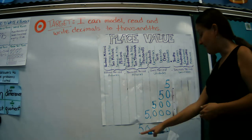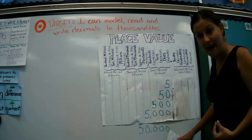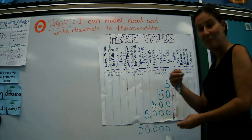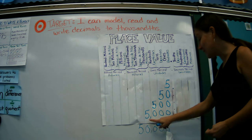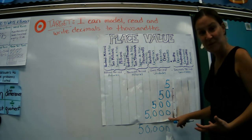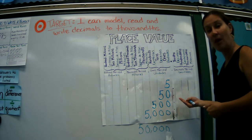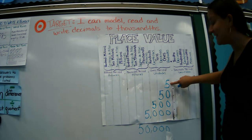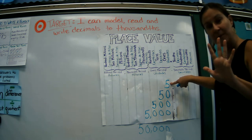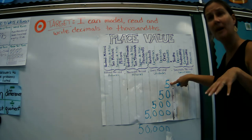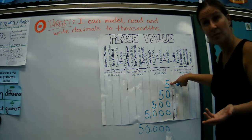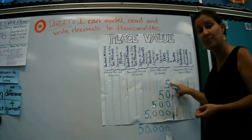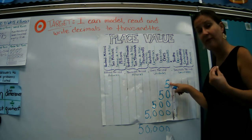It also works backwards. If I take this 50,000 and I divide it by 10 — let's think about that division we've been doing. If I have 50,000 Snickers bars and I break them up among 10 people evenly, each person is getting 5,000 Snickers bars. If we divide by 10, it gets one place smaller on the place value chart. But what happens if I come all the way back to this 5? Now we have 5 Snickers bars, and I have to break those up among 10 people.